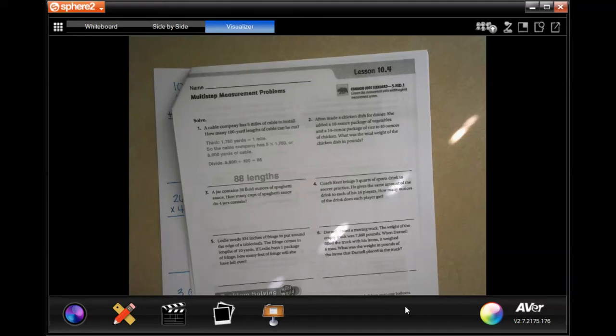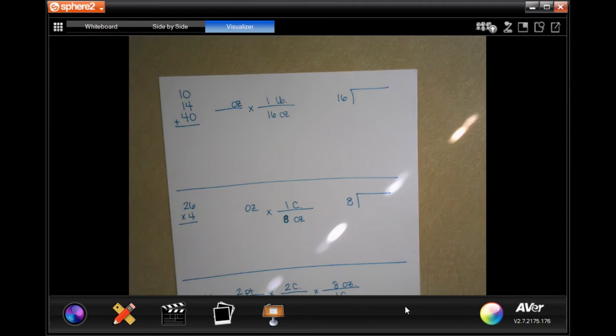Hey y'all, welcome to fifth grade chapter 10, lesson 4. We're going to get started with number two. It says Esther made a chicken dish for dinner. She added a 10 ounce package of vegetables, 14 ounce package of rice, and 40 ounce package of chicken. What was the total weight of the chicken in pounds?